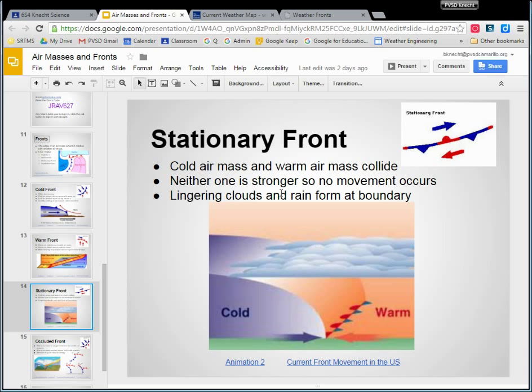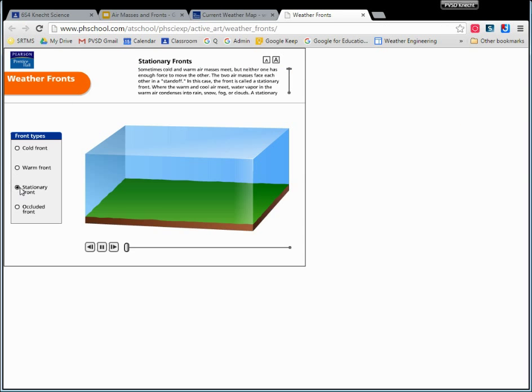So that means that neither one is stronger. The warm is just as strong as the cold. They're not pushing at each other. So they just kind of collide and they just sit there and will sit there and sit there. So here they come, warm air, cold air. They kind of come next to each other. They're sliding past each other.